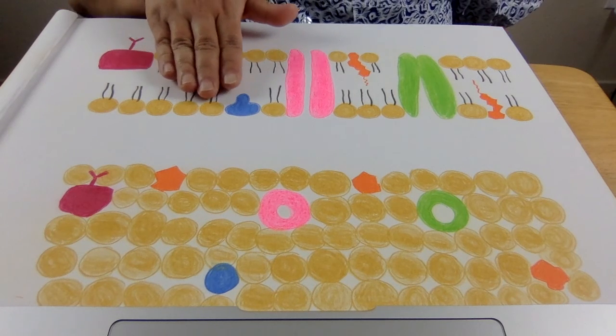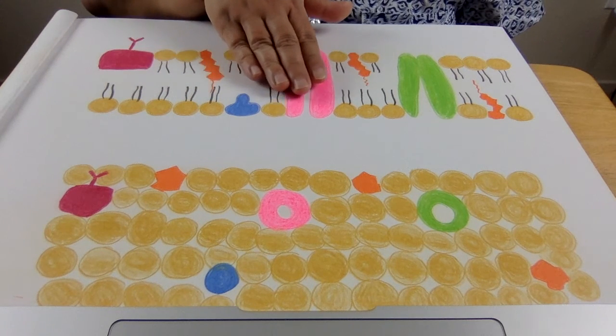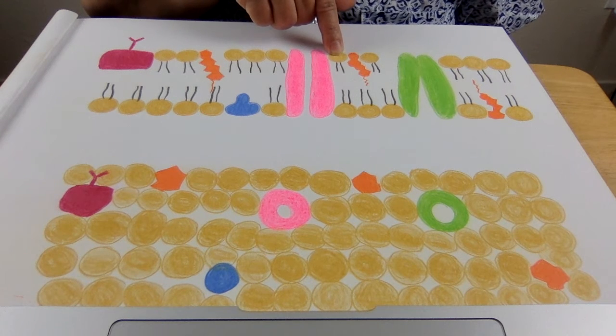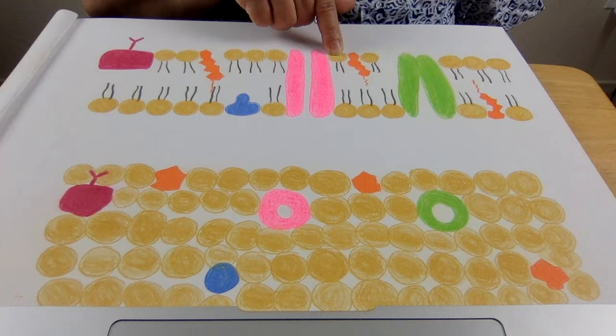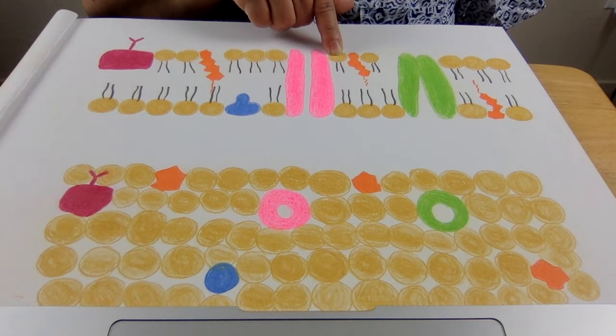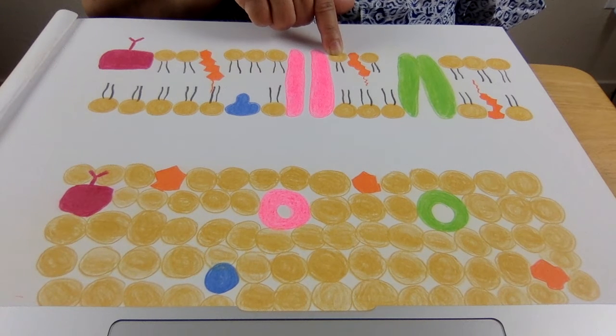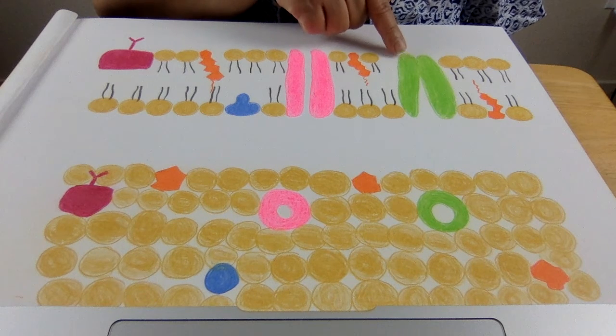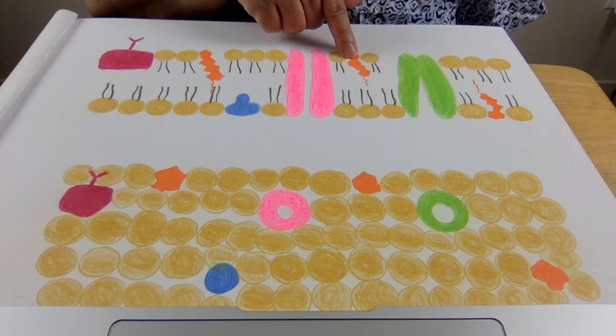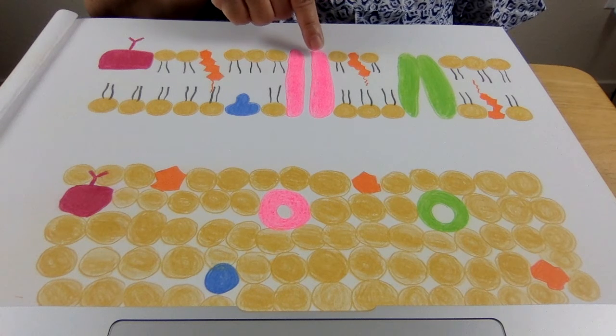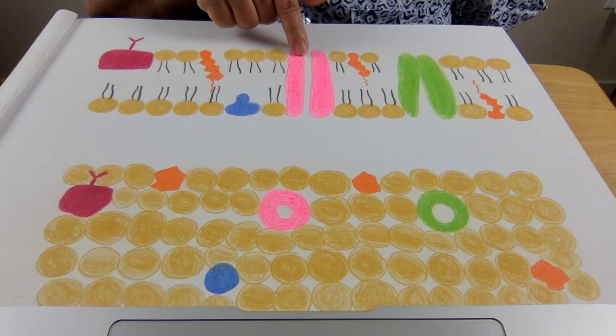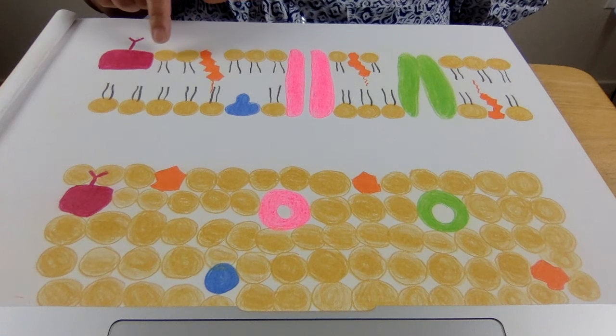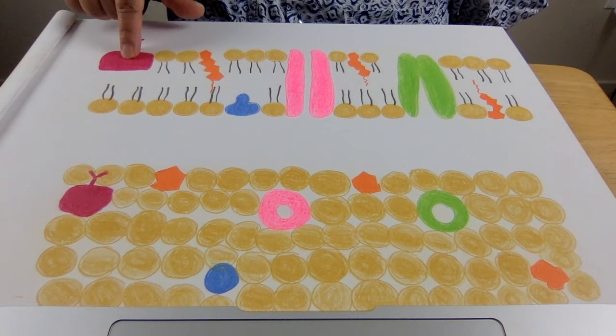This is the side view of the plasma membrane. These are the phospholipids that we can see in yellow. So aside from the phospholipids, there are membrane proteins.